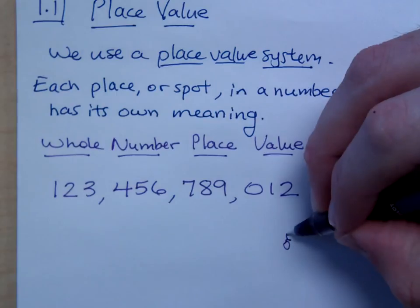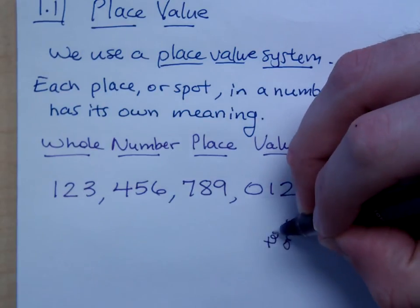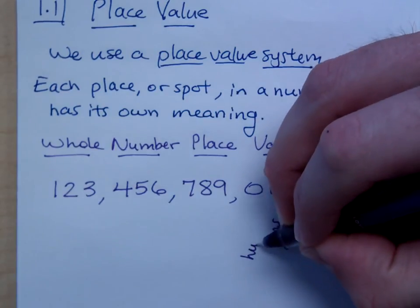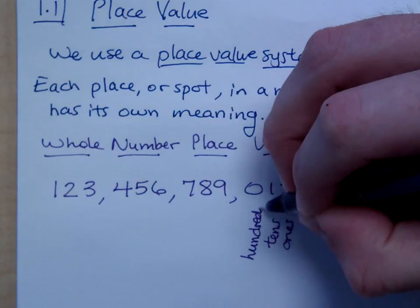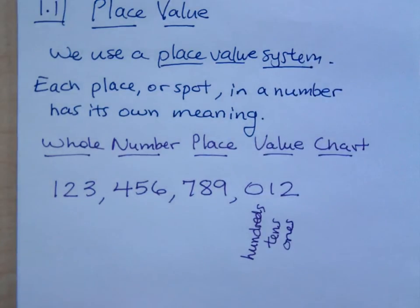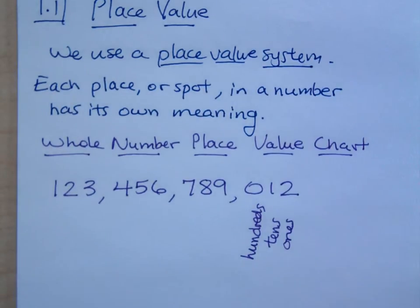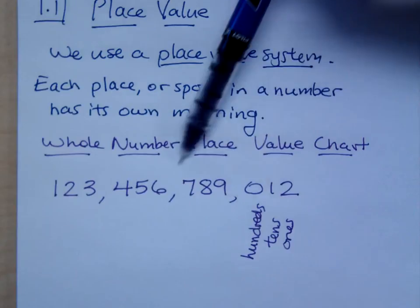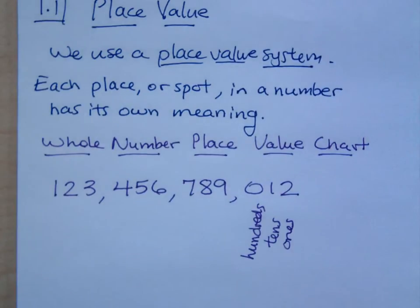So like here, we know that we have our one spot, ten spot, and hundreds. These are the numbers that we are most familiar with, right? And that tells us how many tens, hundreds, ones, and so on that we have. But then as you move on, this second group of numbers where you have the seven, eight, nine, what are these guys? This is measuring what? These measure thousands.